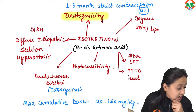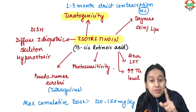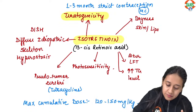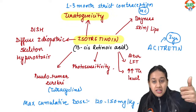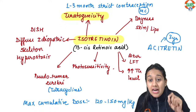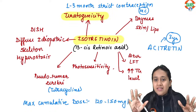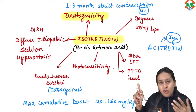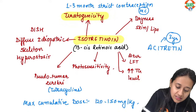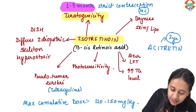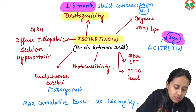For comparison: acitretin, an oral retinoid used for psoriasis, requires three years of contraception after stopping — because acitretin is lipid-soluble and stored in fat cells, remaining in the body for three years. So: isotretinoin — one to three months; acitretin — three years. This is a frequently asked differentiating point.